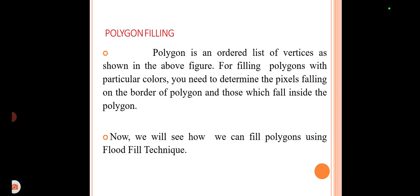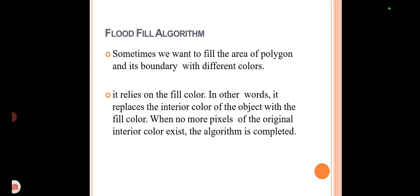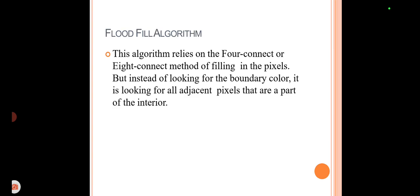One technique for filling a polygon is the flood fill technique. The flood fill algorithm is used when we want to fill the area of the polygon and its boundary with a different color. It relies on the fill color — in other words, it replaces the interior color of the object with the fill color. When no more pixels of the original interior color exist, the algorithm is completed.